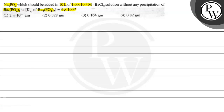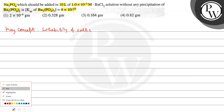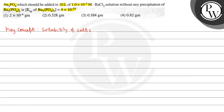The key concept here is solubility of salts. BaCl2 dissociates as: BaCl2 → Ba²⁺ + 2Cl⁻. So the concentration of Ba²⁺ ions is equal to the concentration of BaCl2, which is 1×10⁻⁵ molar, or simply 10⁻⁵ molar.